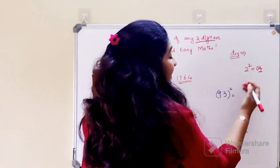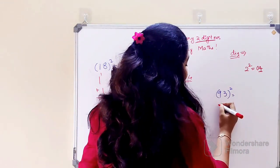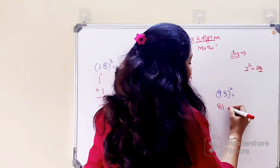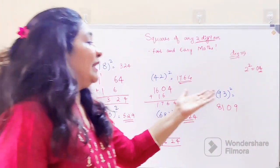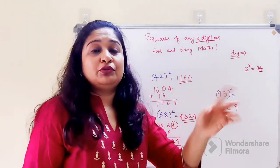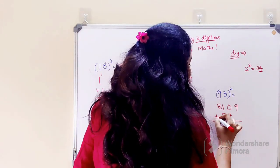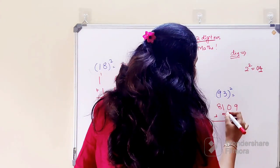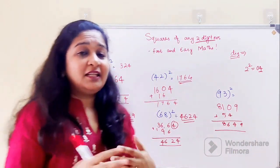Now coming to 93 square: 9 square is 81, 3 square is 09. Multiply everything: 9 into 3 gets you 27, double it because you're multiplying by 2, so 27 into 2 gets you 54. Now just add them: 9, 4, 6, 8. Students, please understand, once you get the hang of it you'll be able to do it in your mind as well, but initially I request all of you to do it on pen and paper.